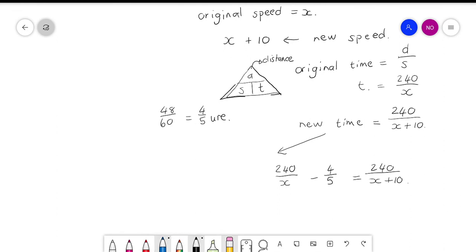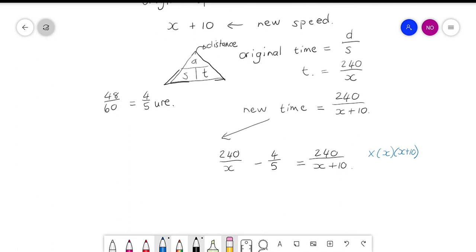And now it is just a case of solving for x. So I'm gonna multiply by x times x plus 10, and then you just solve your equation. So for this first one you will have 240 times 5 times x plus 10. For the second one you will have the 4 that's left at the top times x times x plus 10.